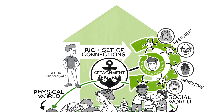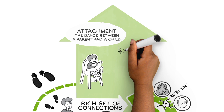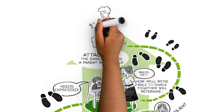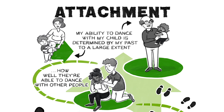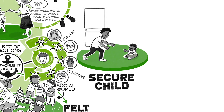When we talk about attachment, we're talking about the dance between a parent and a child. How well we're able to dance together will determine how well they're able to dance with other people later in life. We also know that my ability to dance with my child is determined by my past to a large extent. But we know that infants who become securely attached have parents who are sensitive to their needs.